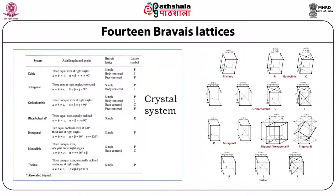Although the primitive unit cell appears to have eight lattice points at its corners, each corner point is shared among eight adjacent unit cells. Therefore, the contribution of each corner lattice point to a particular unit cell is only one-eighth. Since there are eight such corners, the total number of lattice points in a primitive cell is 8 × (1/8) = 1. For a body-centered cell, this corner contribution of 1 is added to the interior point, giving 2.